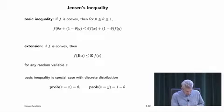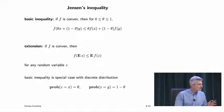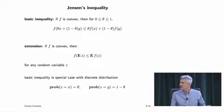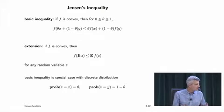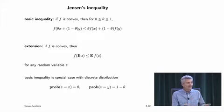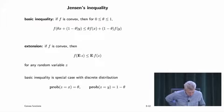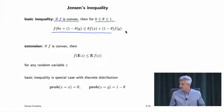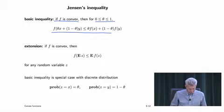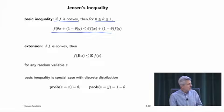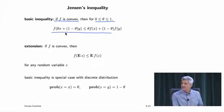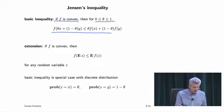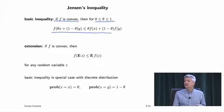Jensen's inequality is about a hundred years old. The basic inequality says: if f is convex and theta is between 0 and 1, then f(theta*x + (1-theta)*y) <= theta*f(x) + (1-theta)*f(y). That's the definition of convexity. You can generalize this to finite sums: if you have points x_1 through x_k with non-negative theta_i summing to 1, then f(sum theta_i * x_i) <= sum theta_i * f(x_i).